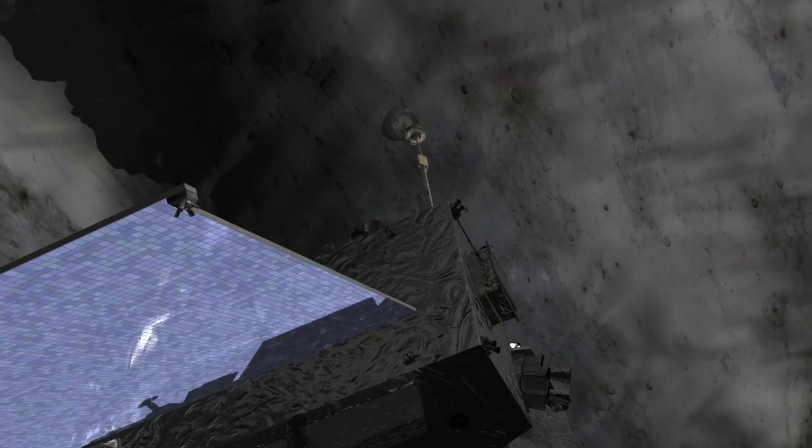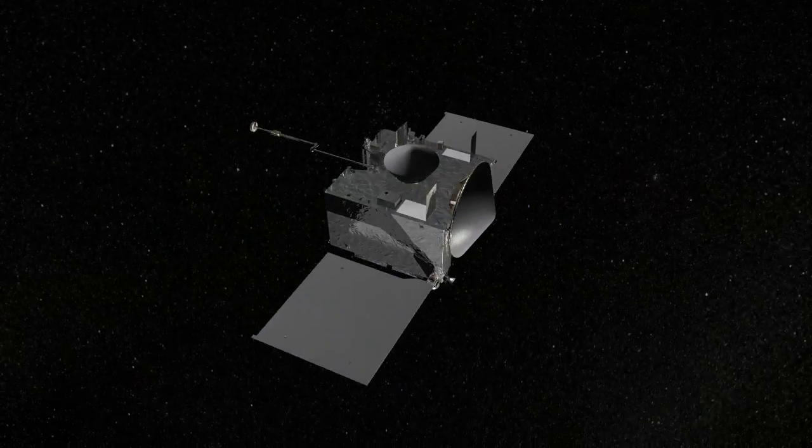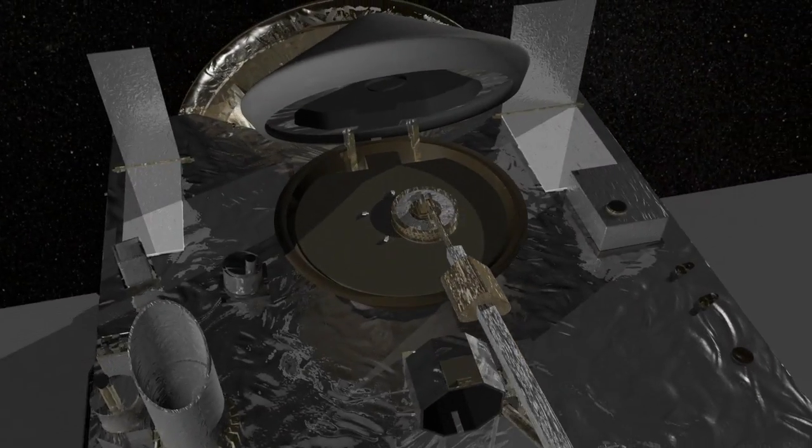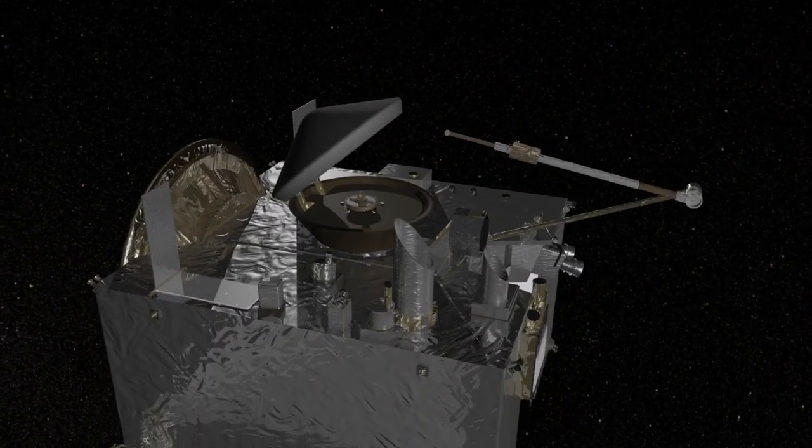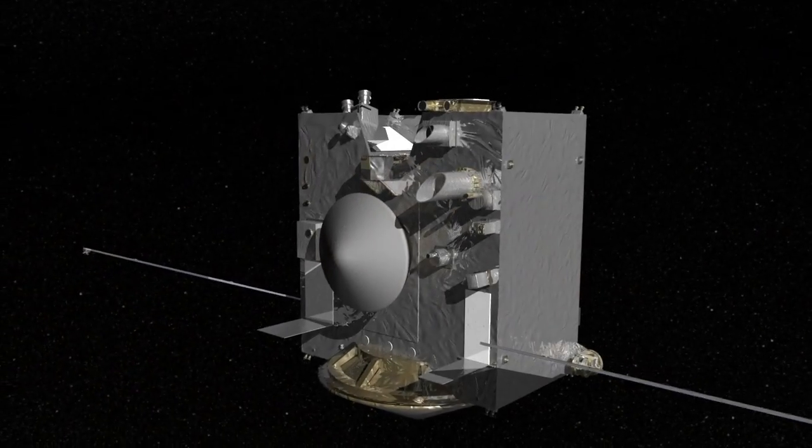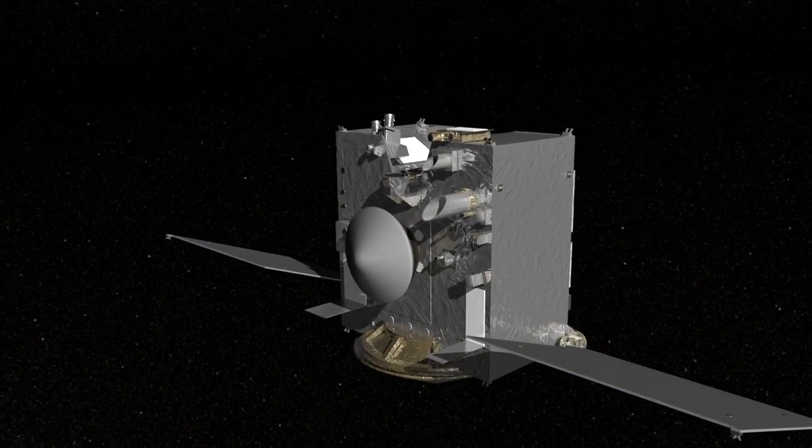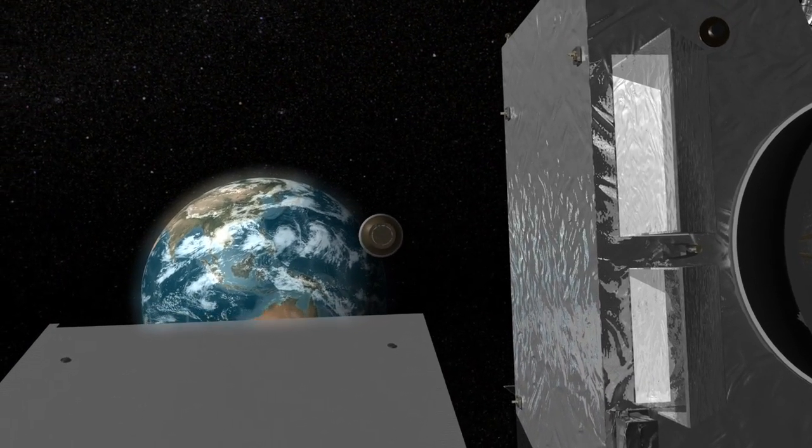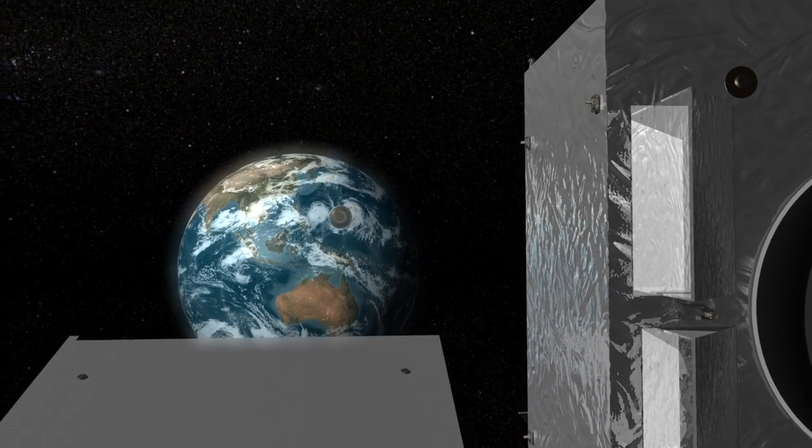After moving away from the surface, OSIRIS-REx will perform a spin maneuver to measure the mass of the sample, then it will carefully stow the TAGSAM head inside the sample return capsule and prepare for the journey back to Earth. Upon arriving home in 2023, OSIRIS-REx will release the sample, giving us a piece of the ancient solar system that will be studied for decades to come.